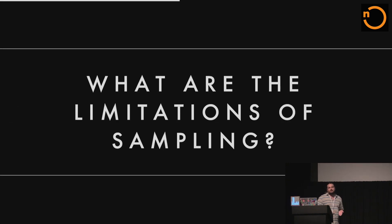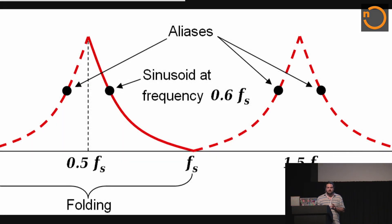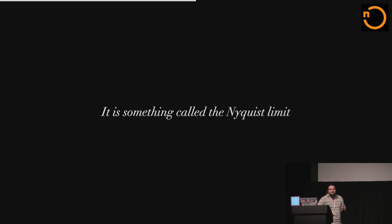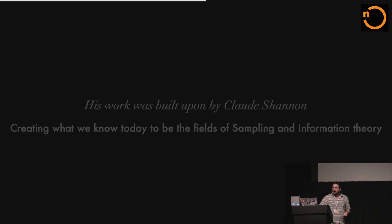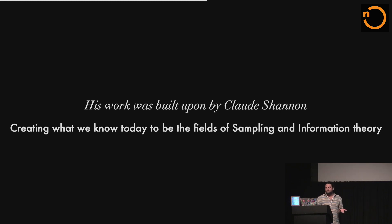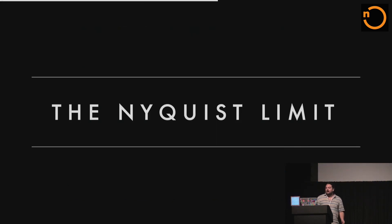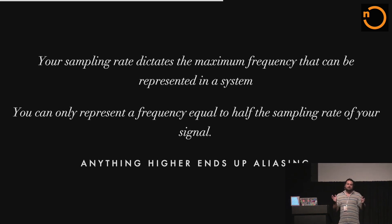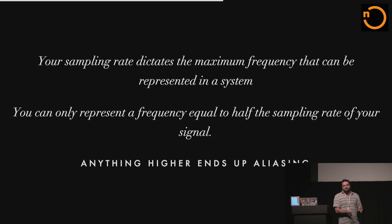There are limitations to sampling — specifically the Nyquist limit, named after Harold Nyquist. Harold Nyquist's work was built on by Claude Shannon, creating much of what we know today as sampling theorem. Your sampling rate dictates the maximum frequency that can be represented in a signal. The Nyquist limit states that whatever your sampling rate is, you can only represent a frequency that's half the sampling rate. So if we sample a system at 8,000 hertz, we can only represent frequencies up to 4,000 hertz. Everything else ends up aliasing and coming back unless you do some filtering to get rid of that noise.